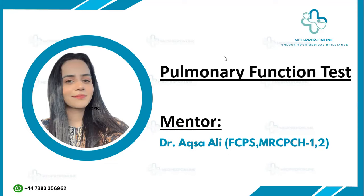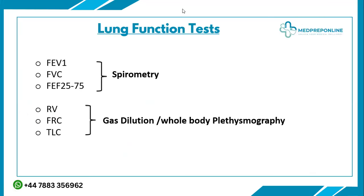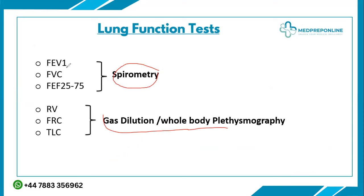First, let's talk about how many types of lung function tests we have. Basically, we have two categories: one is spirometry, and the other is gas dilution and whole body plethysmography. These two things measure different volumes.